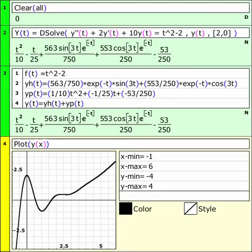I want to give you a visual representation of a forced-damped harmonic oscillator. So let's look at a particular problem here. y double prime plus 2y prime plus 10y equals t squared minus 2. The forcing function is a parabola. Let's let the initial conditions be y of 0 is 2 and y prime of 0 is 0.